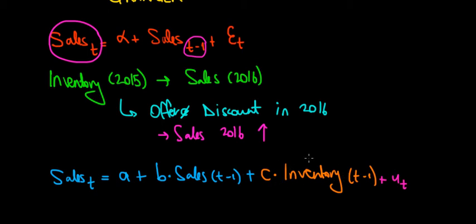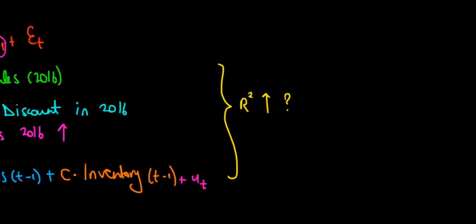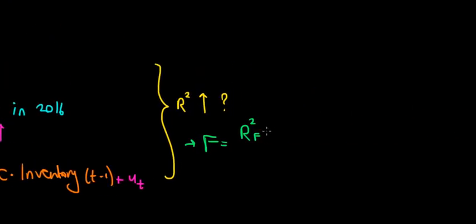Now we've added one more variable to the model, and as usual when we add more variables, our R-squared tends to increase. We want to know if the increase in R-squared is significant. To test this, we do an F-test: we take the difference in R-squared between the full model — which has two independent variables — minus the R-squared of the restricted model.